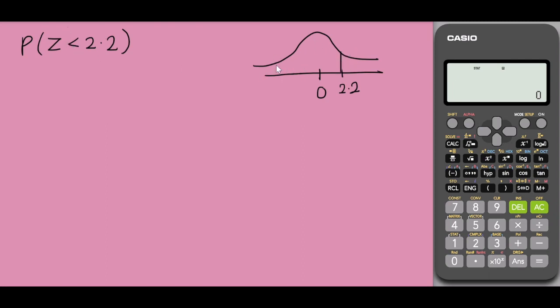The probability of Z less than 2.2 would be the area on my left. So to find the area on my left, I would go to shift 1, select 5 for distribution, and I would select P. So this is equals to P of 2.2.